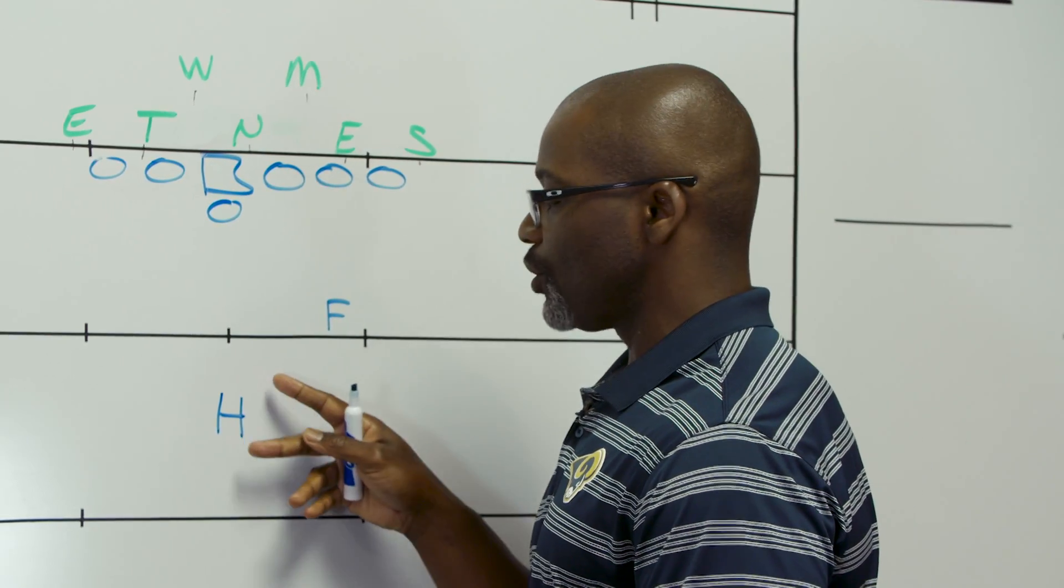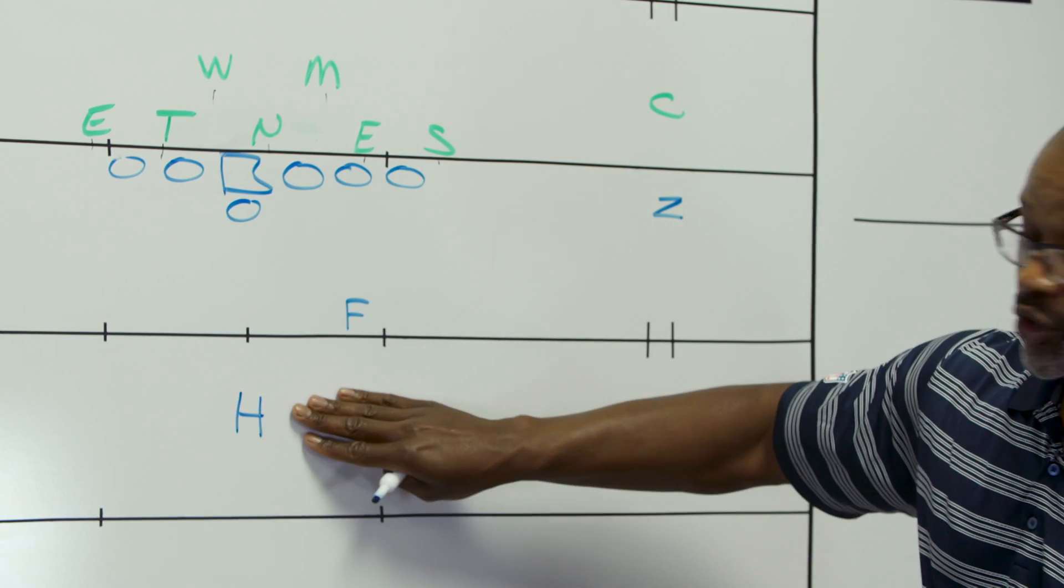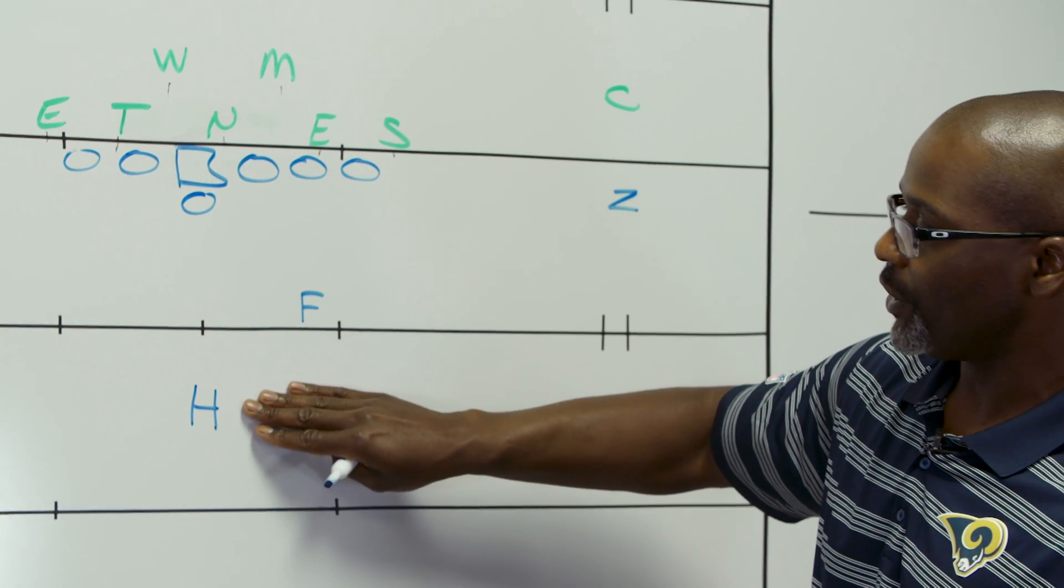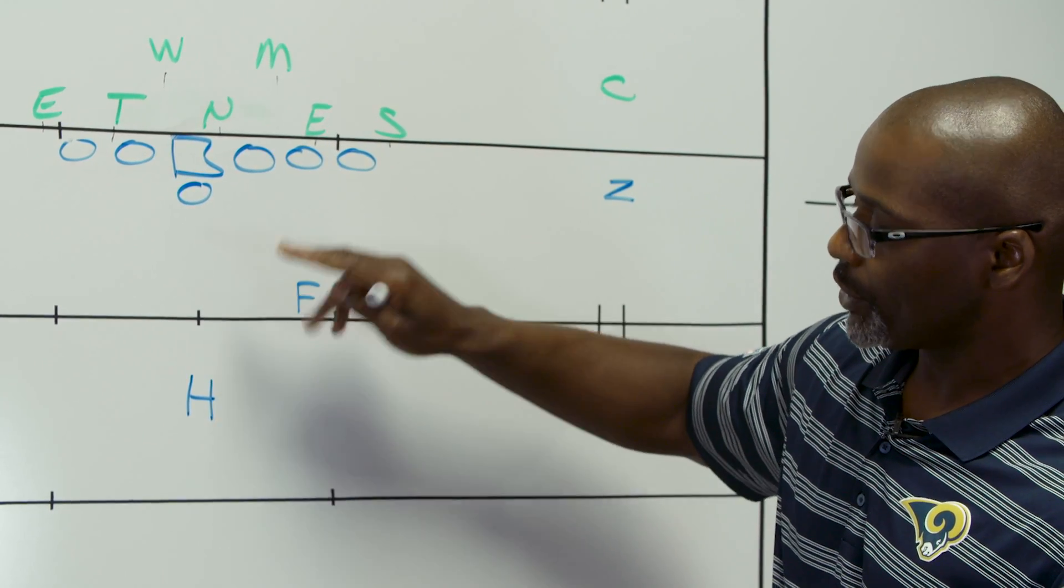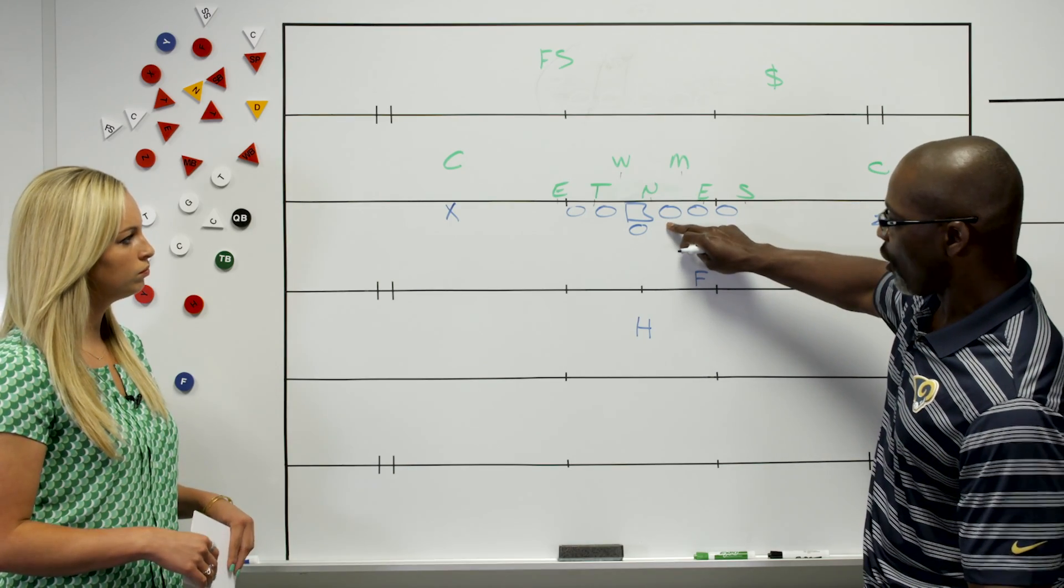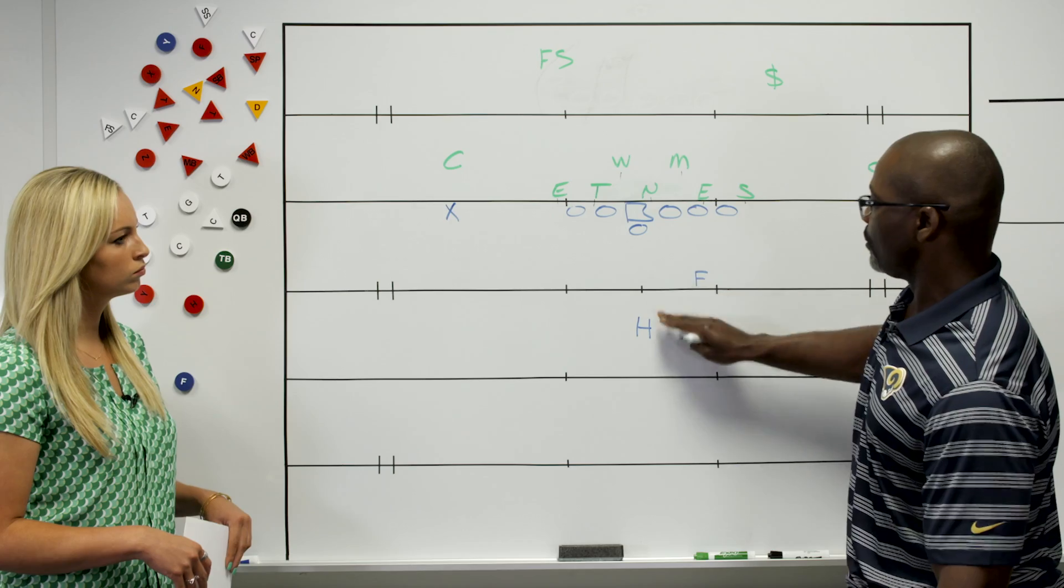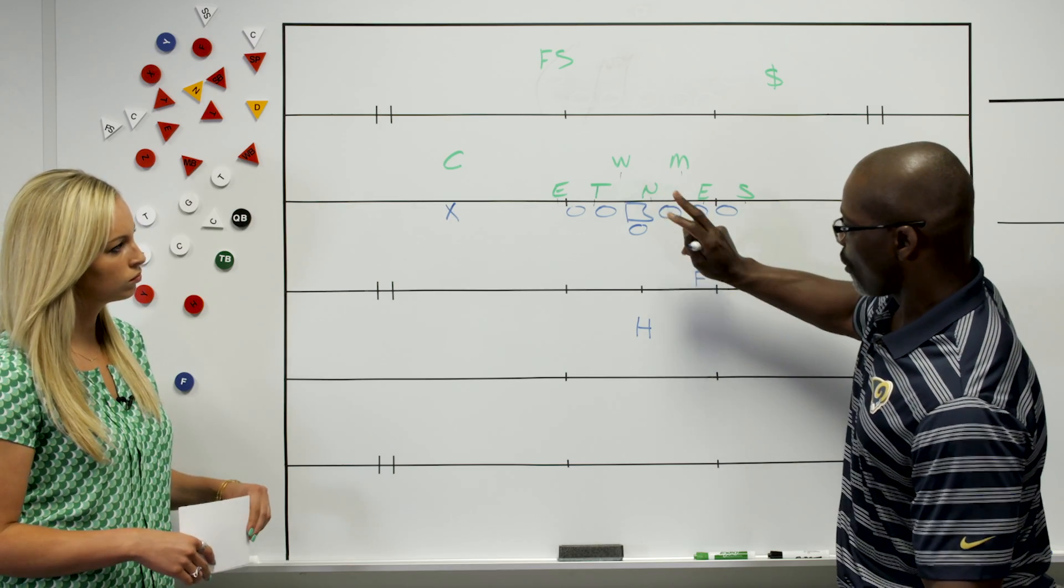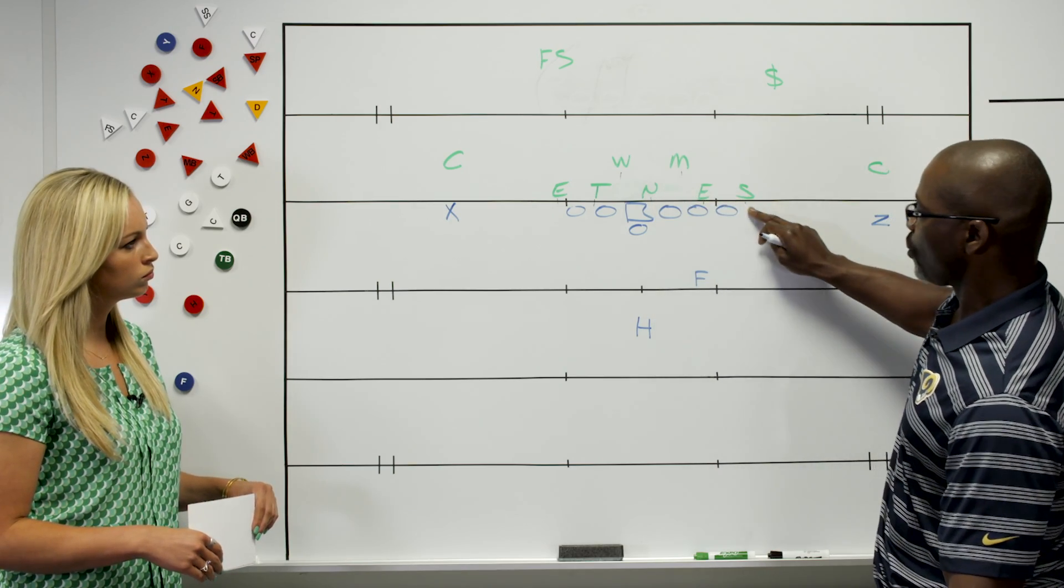And what we have the H or the tailback doing is he's going to line right at about seven to seven and a half yards. We always give him an alignment, an aim point, which is the inside leg of the guard, and we also give him a read. His read is he's going to start up from the A gap and work its way out.